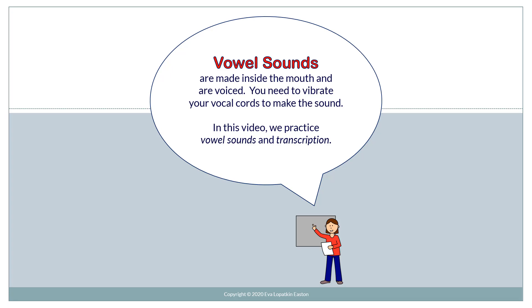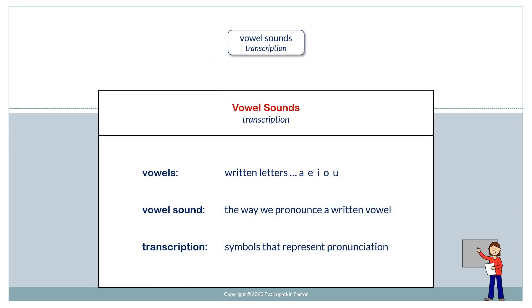Vowel sounds are made inside the mouth and are voiced. You need to vibrate your vocal cords to make the sound. In this video we practice vowel sounds and transcription. Vowels are written letters A, E, I, O, U. A vowel sound is the way we pronounce a written vowel. Transcription is the symbols that represent pronunciation.